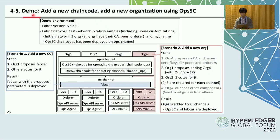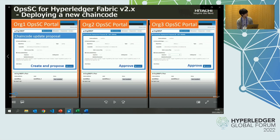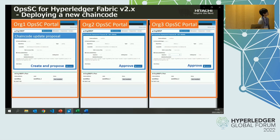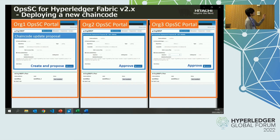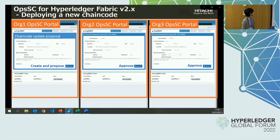Okay, now I will give a demonstration using a customized test network in fabric samples. This is a scenario for deploying a new chain code. This is a portal screen for interacting with OPSSC. In this case there are three organizations — org1, org2, and org3. Each org's admin uses a separate portal for each organization.